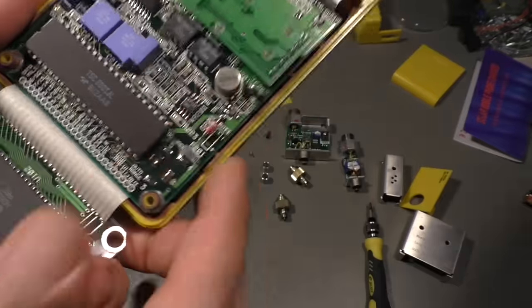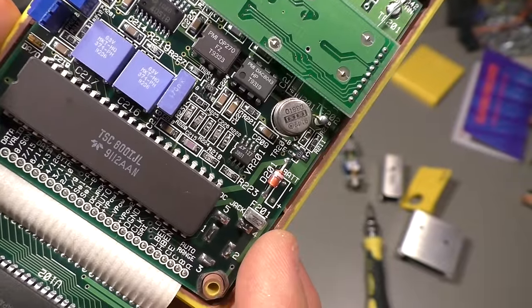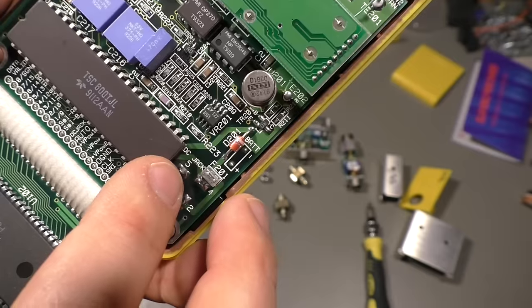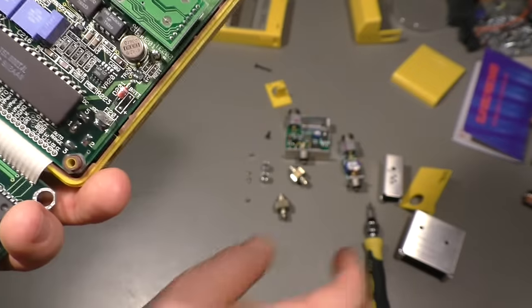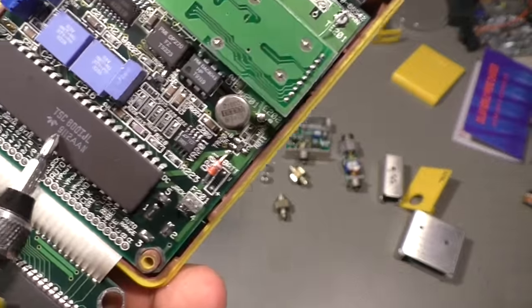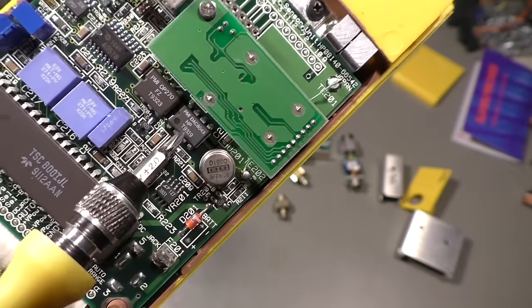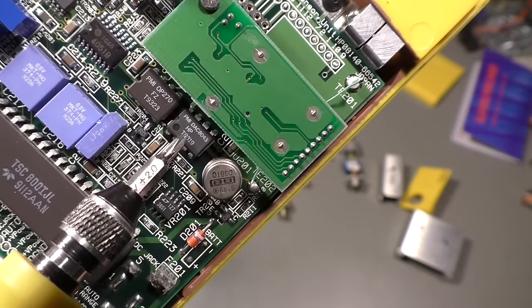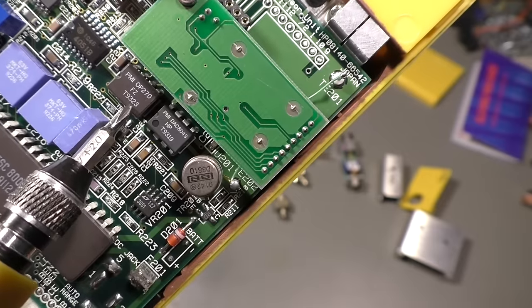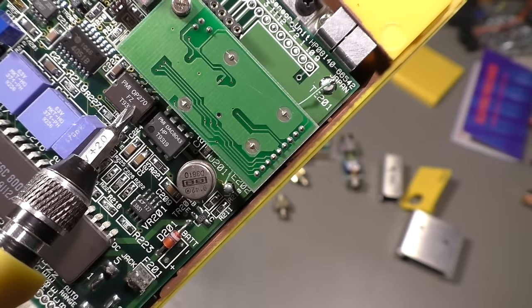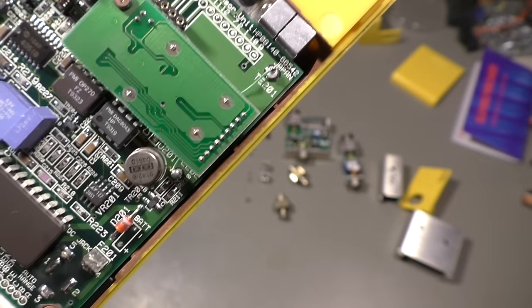Then we have some sort of microcontroller, also Hitachi HD 6301. Then we have a TSC 800 IJL, that's an analog to digital converter. And as you can see on the date code 91. Then we have a digital to analog converter, a DAC 8043.